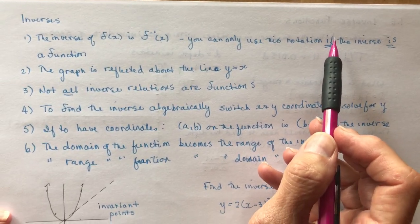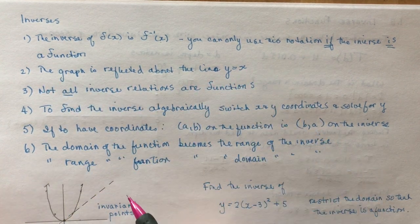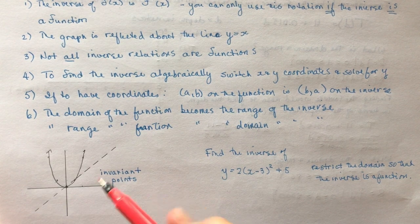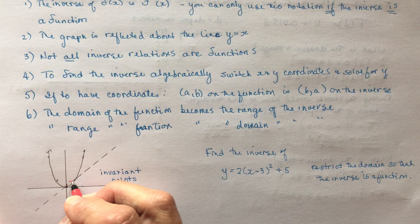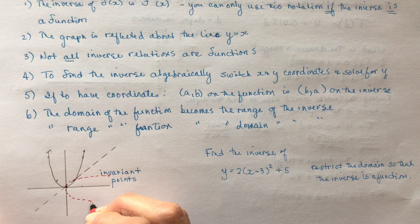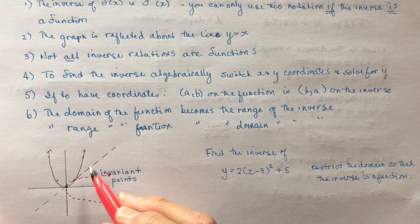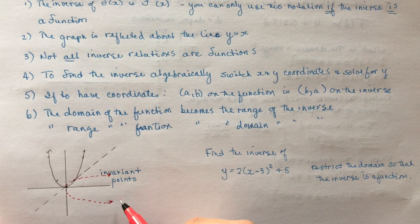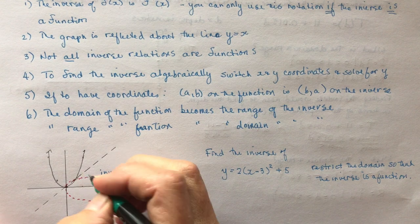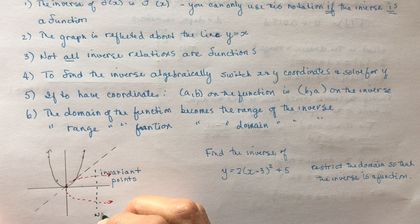The graph is reflected about the line y = x. So if this was my parabola and I want to find the inverse, then it would be going like this. Remember these beautiful drawings you did back in grade 11? Now the problem is that the inverse of a quadratic is not a function, and the reason you know that is because it does not pass the vertical line test. Vertical line test fails, so not a function.